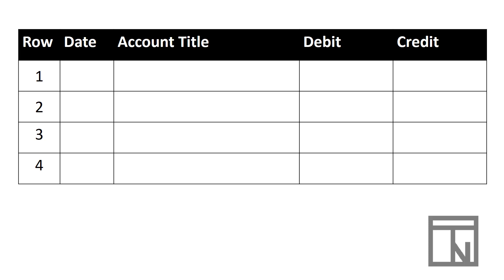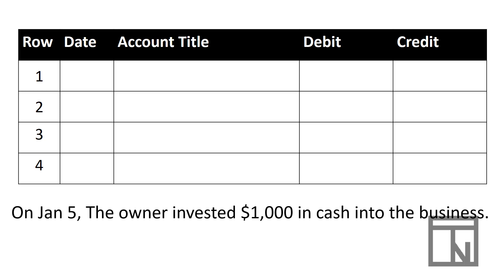Let's record the first transaction: on January 5th, the owner invested a thousand dollars in cash. We start by recording the date. On row one, we record the date in a short format — simply the month slash day in numbers. Note that the date is only recorded on the first line of each transaction; subsequent lines don't need the date, which helps break up the transaction so you can easily see where one starts and the other stops.